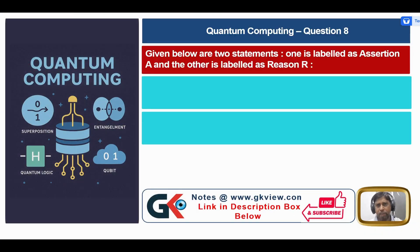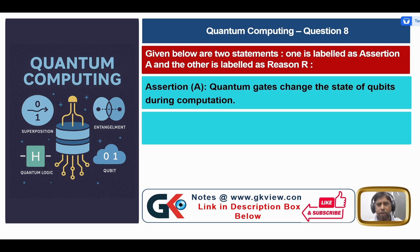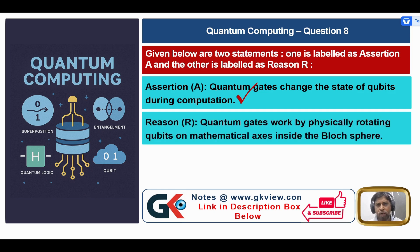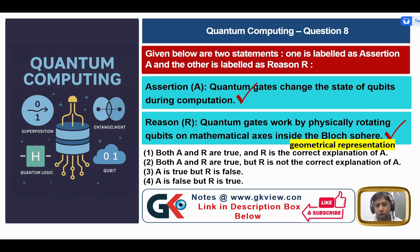Question 8: Assertion A — Quantum gates change the state of qubits during computation — this is a true statement. Reason R — Quantum gates work by physically rotating qubits along mathematical axes inside the Bloch sphere, which is a geometrical representation of a qubit. Reason is also true. Our answer is 1: both A and R are true, and R is the correct explanation of A.